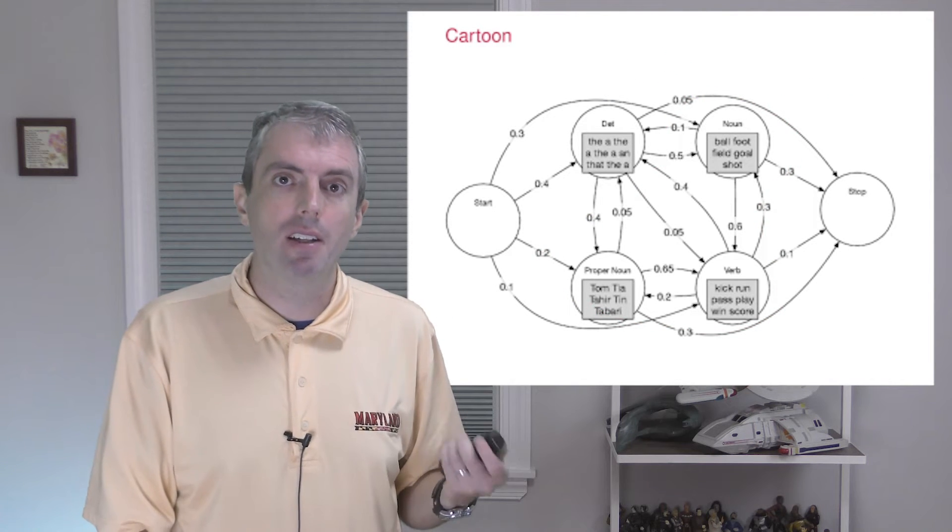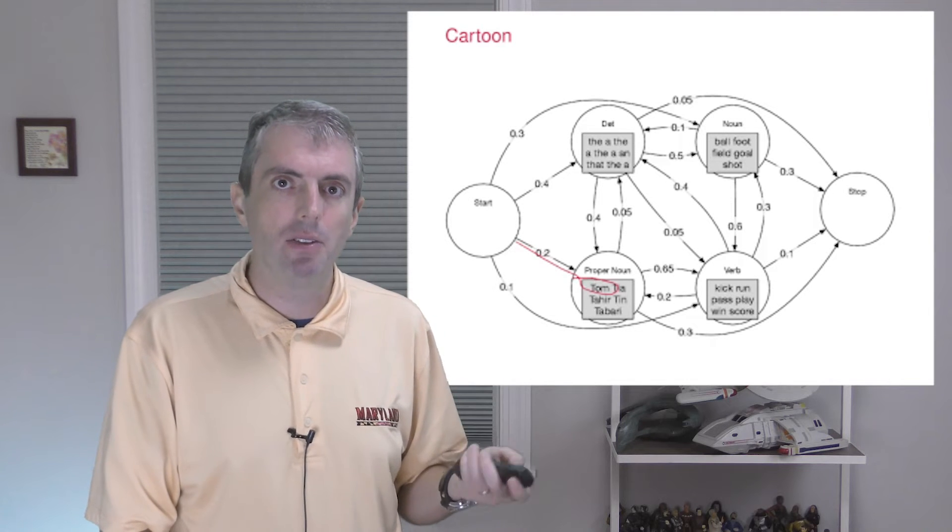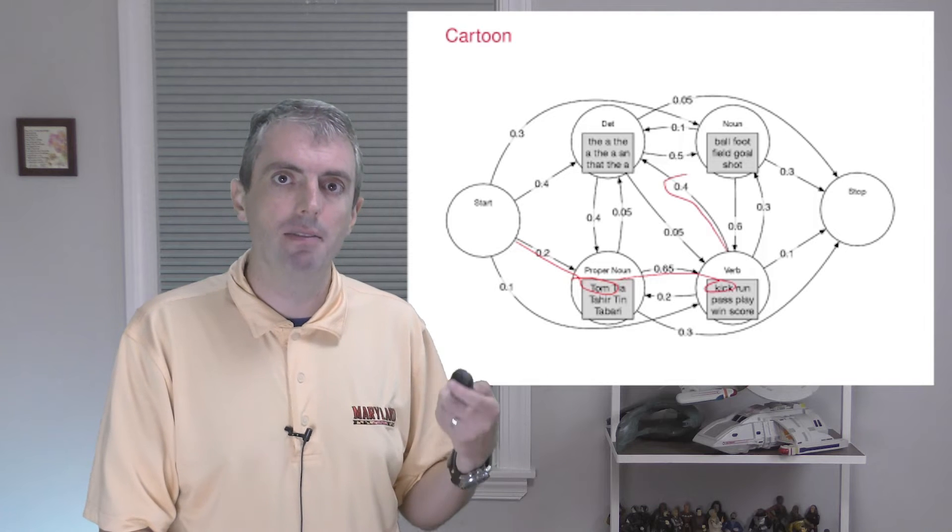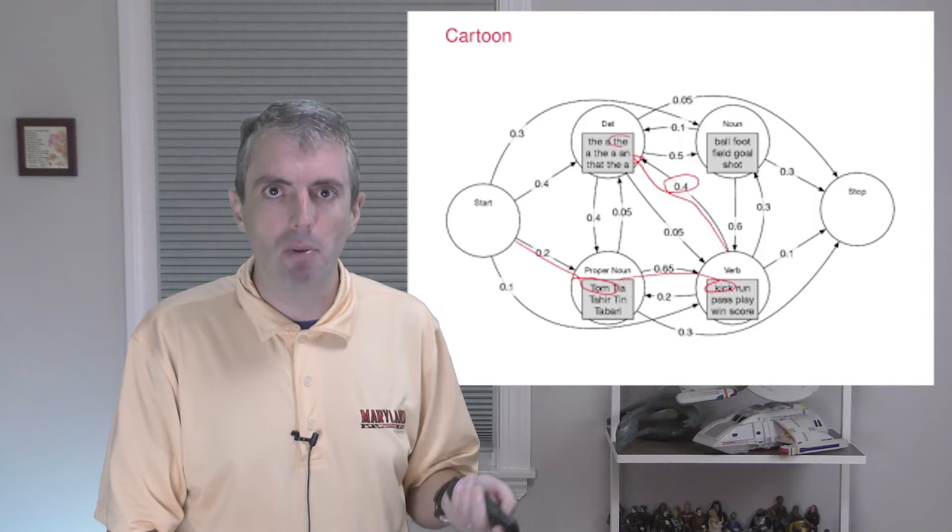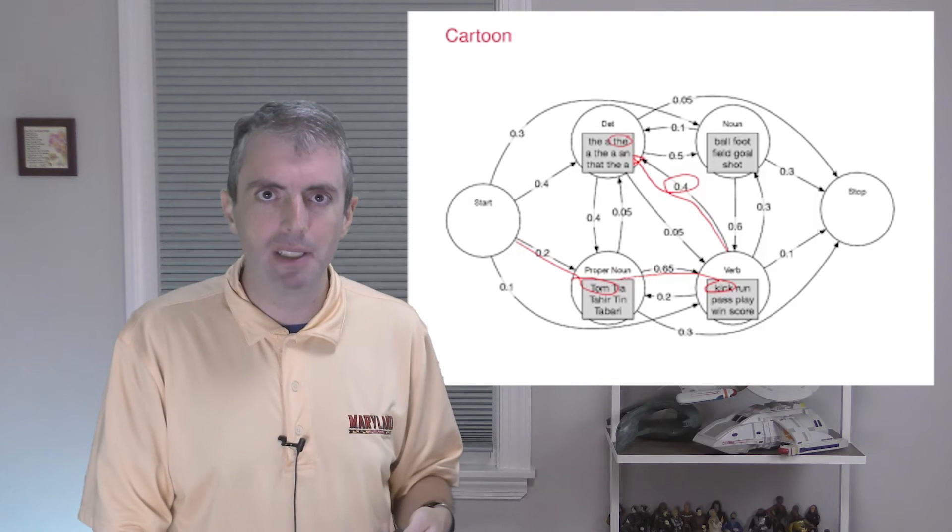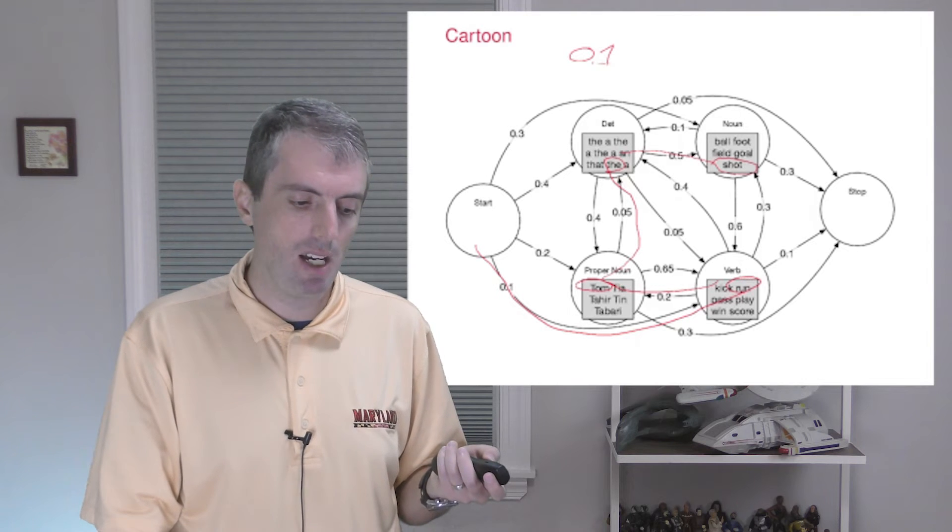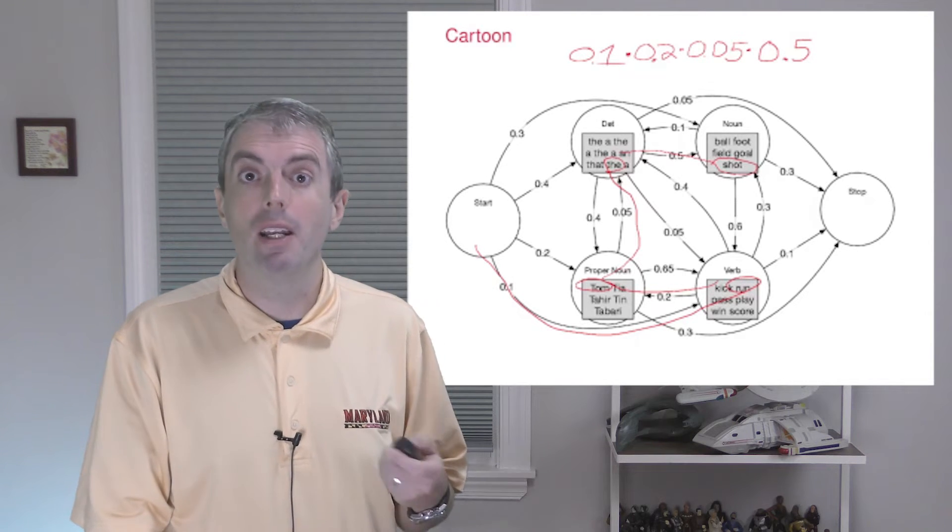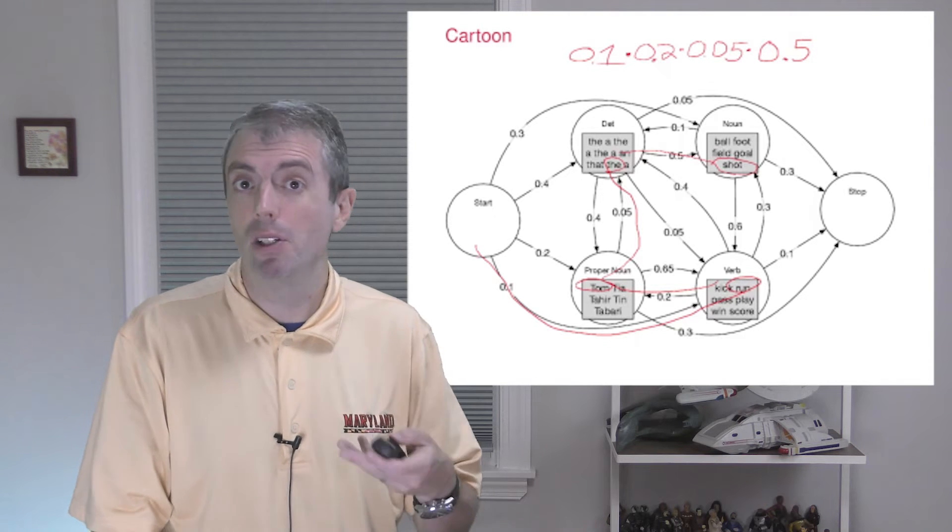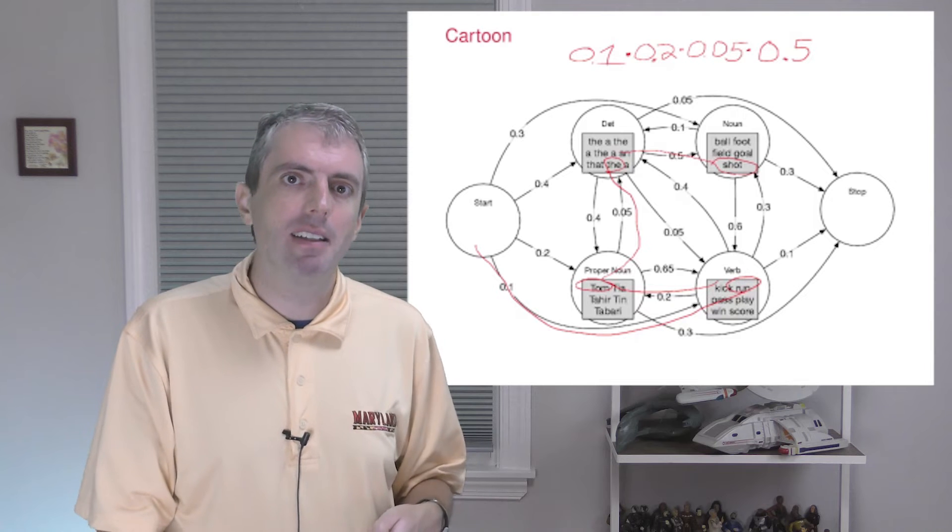So the string Tom Kick The Ball takes this path associated with transition probabilities 0.2, 0.65, 0.4, and 0.05. I'm leaving out the emission probabilities for the moment. Run Tom The Shot would have 0.1, 0.2, 0.5, 0.5, which is much, much lower. To get the emission probabilities in there, let's go through this a little bit more formally.